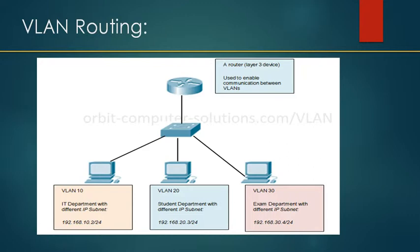A virtual local area network offers a method of dividing one physical network into multiple broadcast domains. However, VLAN-enabled switches cannot by themselves forward traffic across VLAN boundaries. For inter-VLAN communication, a router is required. The addition of a router makes it possible to send traffic between VLANs while still containing broadcast traffic within VLAN boundaries. The router uses IP subnets to move traffic between VLANs.